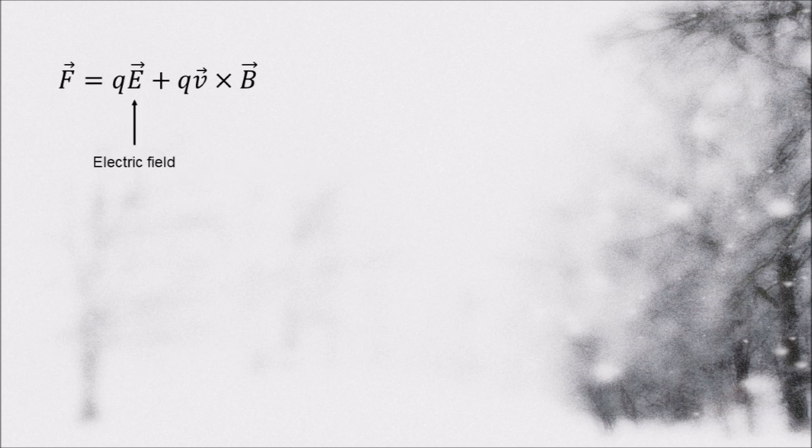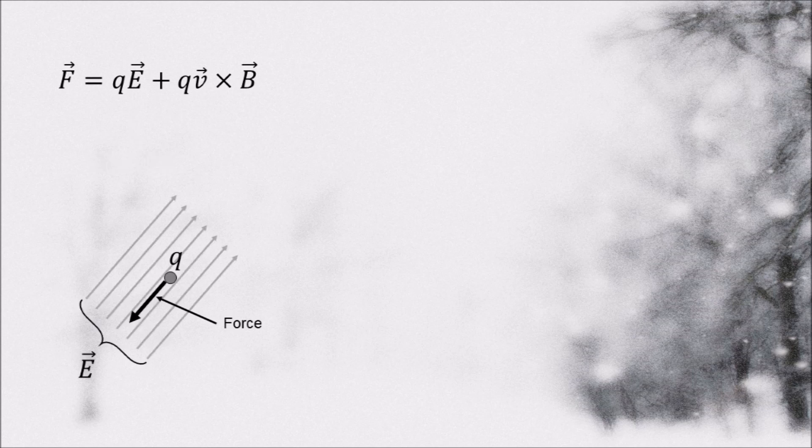E here is the electric field vector. The force in this case, acting on the electron, is opposite to the direction of the electric field.